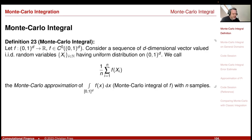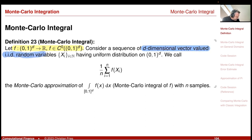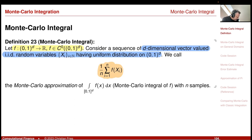Here is my definition of the Monte Carlo integral. Given a function from the unit cube [0,1] to the power of d to the real numbers, we consider a sequence of d-dimensional vector-valued IID random variables having uniform distribution on this cube. Then we call 1 divided by n times the sum of f(xi) from i=1 to n the Monte Carlo approximation of the integral of f(x) dx over that d-dimensional cube with n sample points.